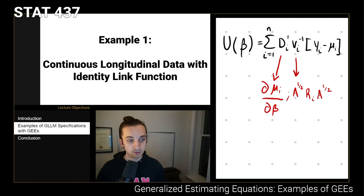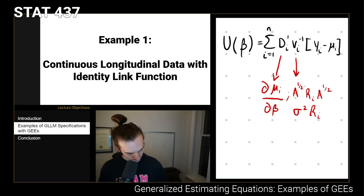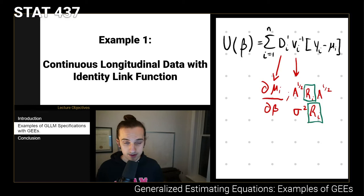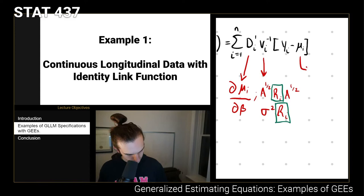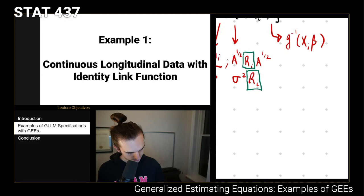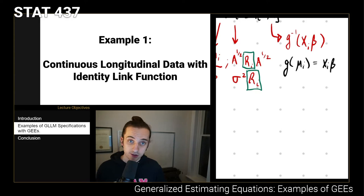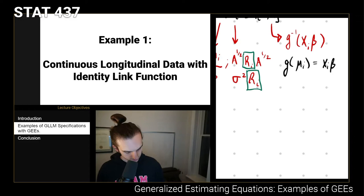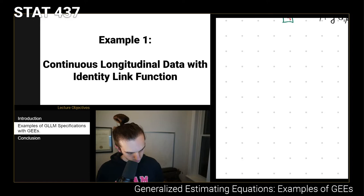If we're willing to assume constant variance across time points we might write Vᵢ as σ²Rᵢ, where Rᵢ is a correlation matrix reflecting whatever correlation structure we're assuming. Finally, μᵢ is given by the inverse link function applied to the linear predictor Xᵢβ, so g(μᵢ) = Xᵢβ. For binomial data we use the logit link; for count data, probably the log link.